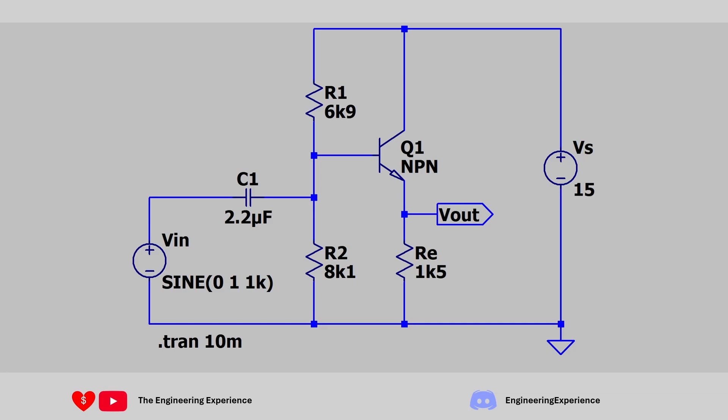On the screen now, you've got the final circuit with all the values calculated and put into the circuit. We calculated RE as being 1.5 kilo ohms, R1 as being 6900 ohms, and R2 being 8100 ohms. We made a high pass filter with a cutoff frequency of 20 hertz. That gave us a capacitance value of approximately 2.2 microfarads for the input coupling capacitor. So that is the final solution for this question.